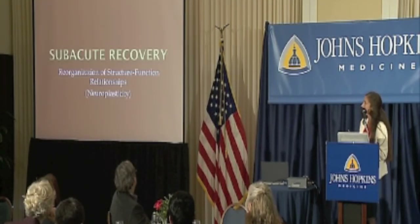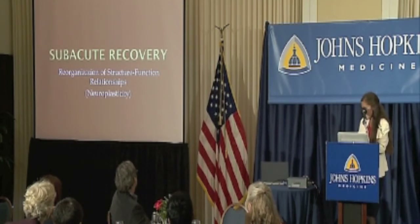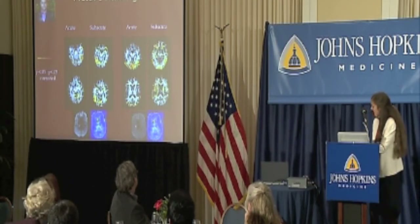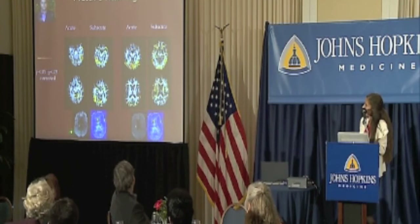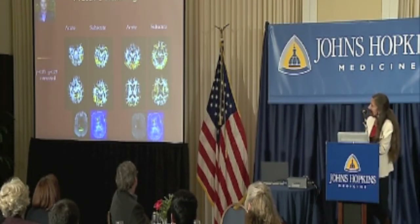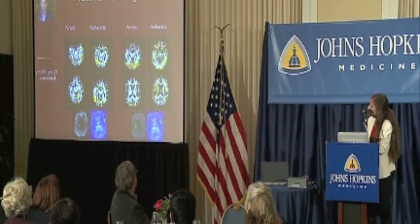Subacute recovery really depends on reorganization of structure-function relationships. Neuroplasticity allows parts of the brain that aren't used to doing these tasks to take over new functions. In patients studied acutely, one had a tiny lesion in the thalamus — the gateway to the cortex — with no damage to the cortex and no low blood flow to the cortex, yet the cortex was not activated normally: we saw no activation of the left cortex during a naming task.